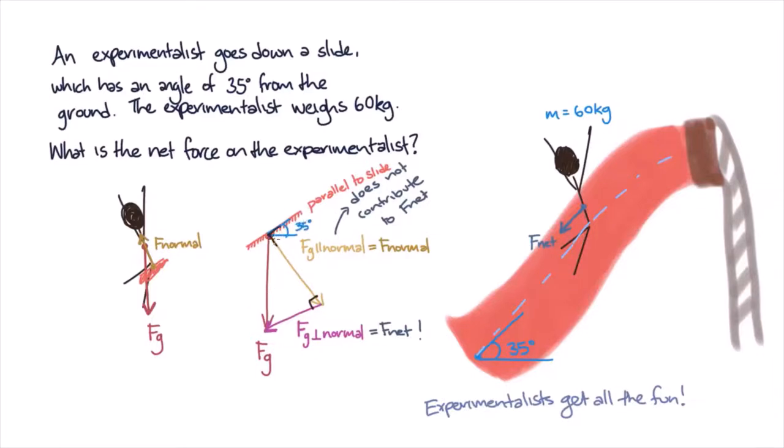Now, the angle of the slide and the angle of the normal force together make up a 90 degree angle. And similarly, the horizontal and vertical components will also make up a 90 degree angle. So we can see that the angle at the top of our triangle is also equal to 35 degrees.